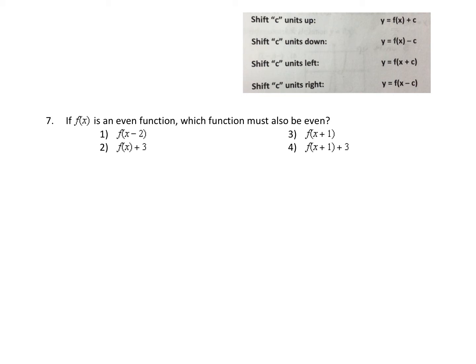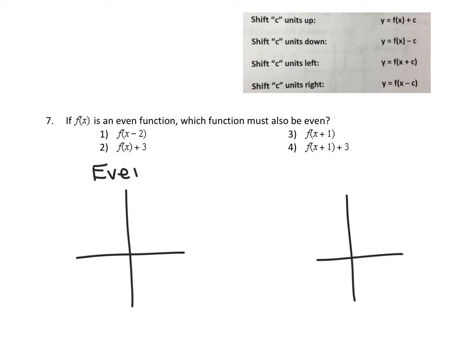Number seven: if f(x) is an even function, which function must also be even? They're not talking about an even degree function like x squared — they're talking about an even function. An even function is a function that is symmetric to the y-axis. If I were to take my graph and fold along the y-axis, one half of the graph would fold directly on top of the other half.